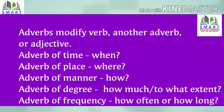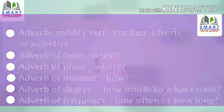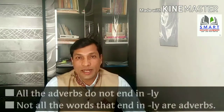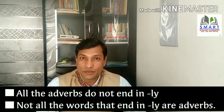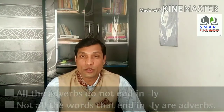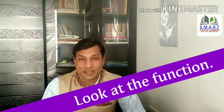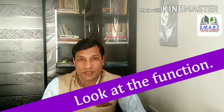Then we studied adverbs. Adverbs modify a verb, another adverb, or an adjective. Adverb of time tells us when something happens. Adverb of place tells us where something happens. Adverb of manner tells us how something happens. Adverb of degree tells us the degree of another adverb. Adverb of frequency tells us how often or how long something happens. We also studied that not all adverbs end in -ly, and not all words ending in -ly are adverbs. We need to look at the function a word performs in a sentence to identify the correct part of speech.